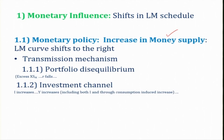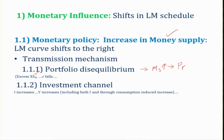Let us use this two-stage transmission mechanism, which we discussed in a previous session. When there is an increase in money supply in the economy, people will be content with more money — there will be portfolio disequilibrium and excess supply of money in the market. Because of excess supply of money, people will invest their money in new assets in the bond market — they will demand more bonds. As a result, the price of bonds increases and the rate of interest decreases due to portfolio disequilibrium.